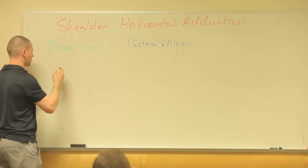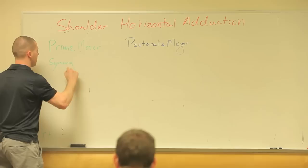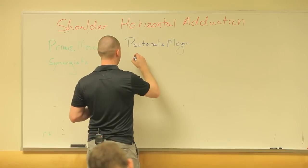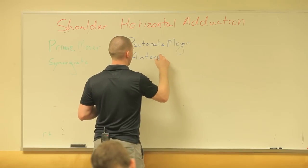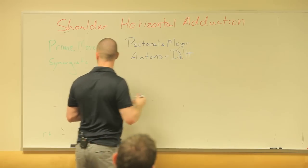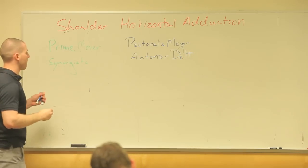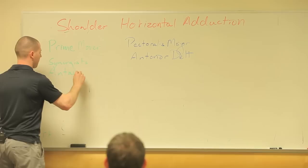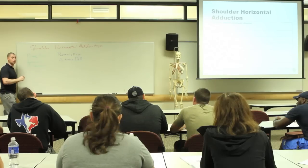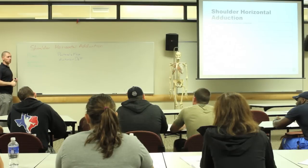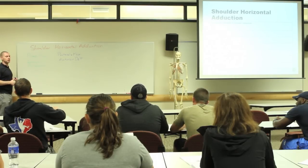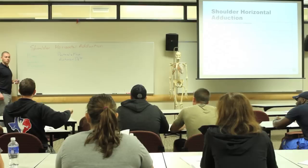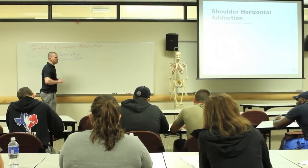Synergists. There could be more than one, and in some of our other graphs there are a lot of muscles per category. For this one, the synergist is posterior delt. There's a reason I picked this graph to start with — some of these graphs get very complicated.